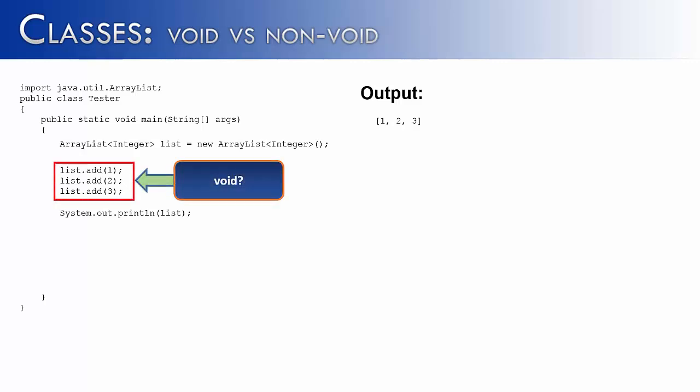Now the question becomes, are these void method calls? And they sure do look like void methods, and it would make sense that they're void because what they're doing is they're adding something to the list, and they're not bringing anything back to the program. Or are they?